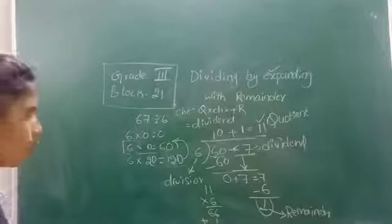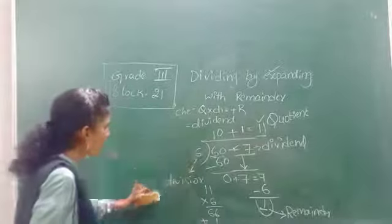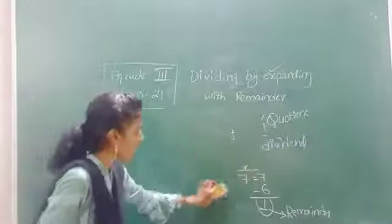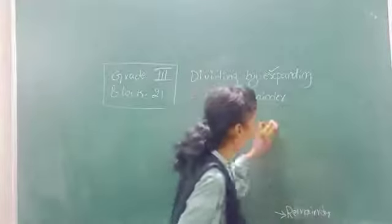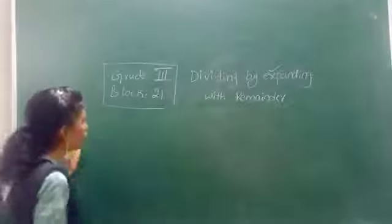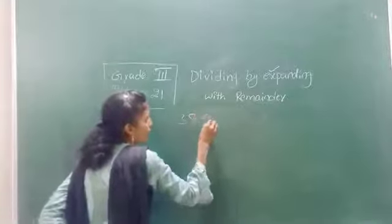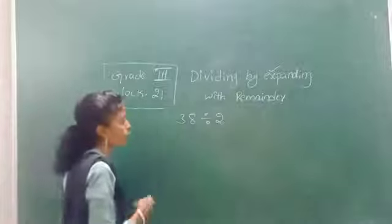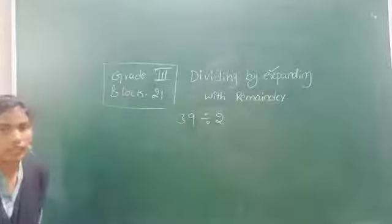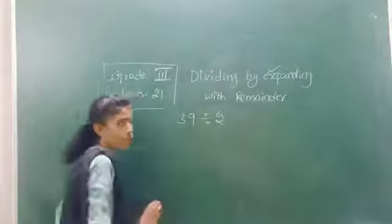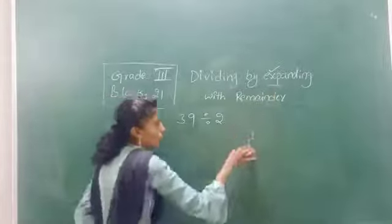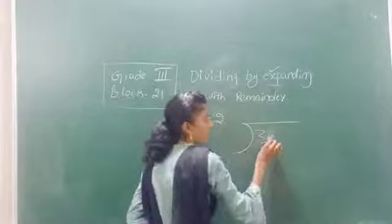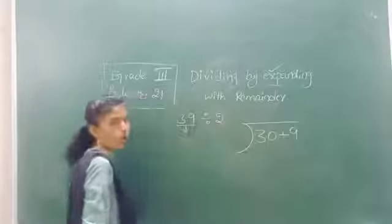Let's look at one more example to understand better. You have to read the main table of the divisor — the normal table — then add zeros to the normal answers to get the 10-times table. For example, here I have 39 divided by 2. I am dividing 39 by 2, so it will have a remainder. Using the expansion method, expand the dividend and write it inside the dividend house. 30 plus 9 is the expansion form for 39. And 2 is the divisor.